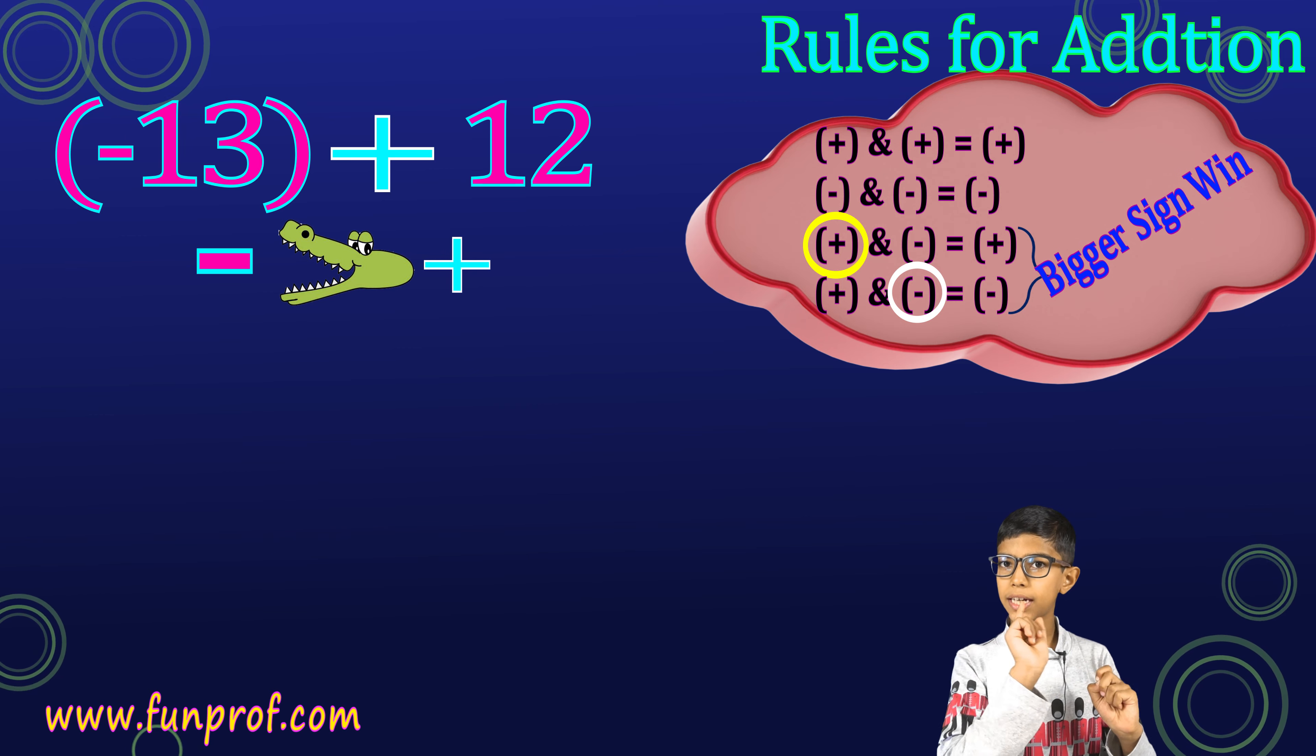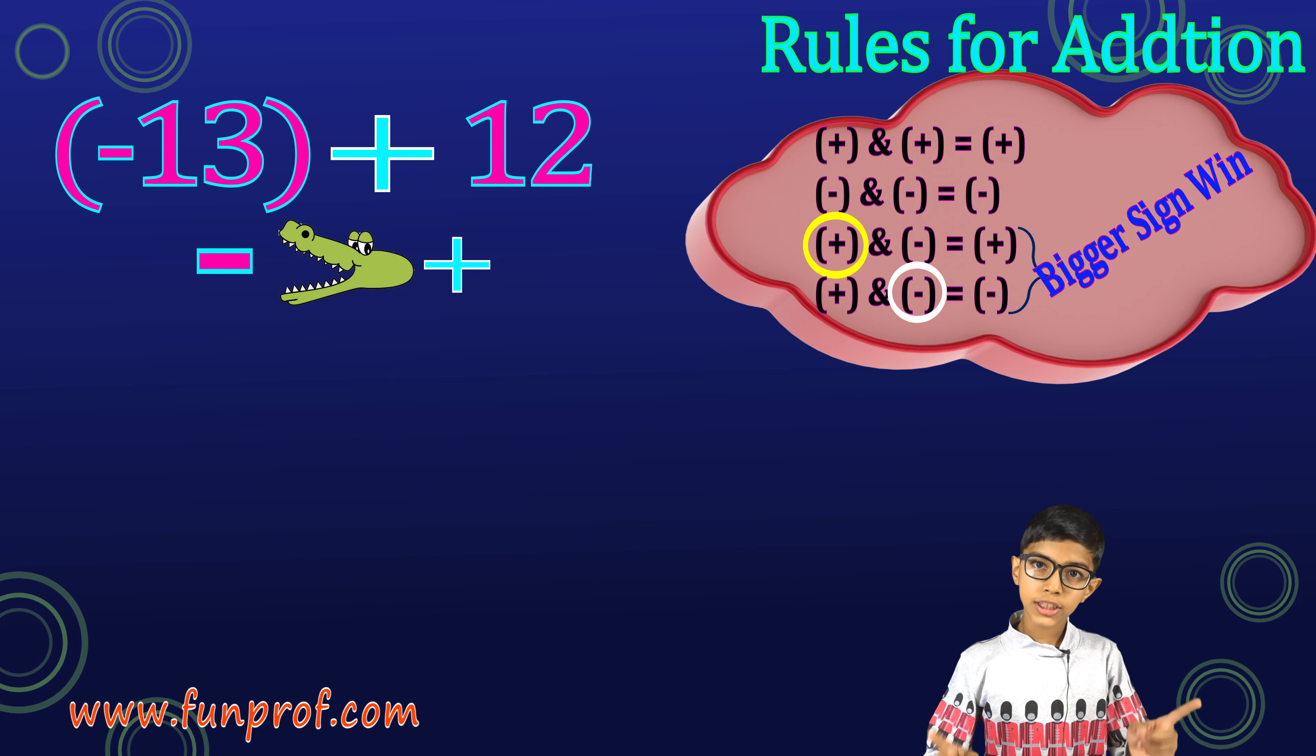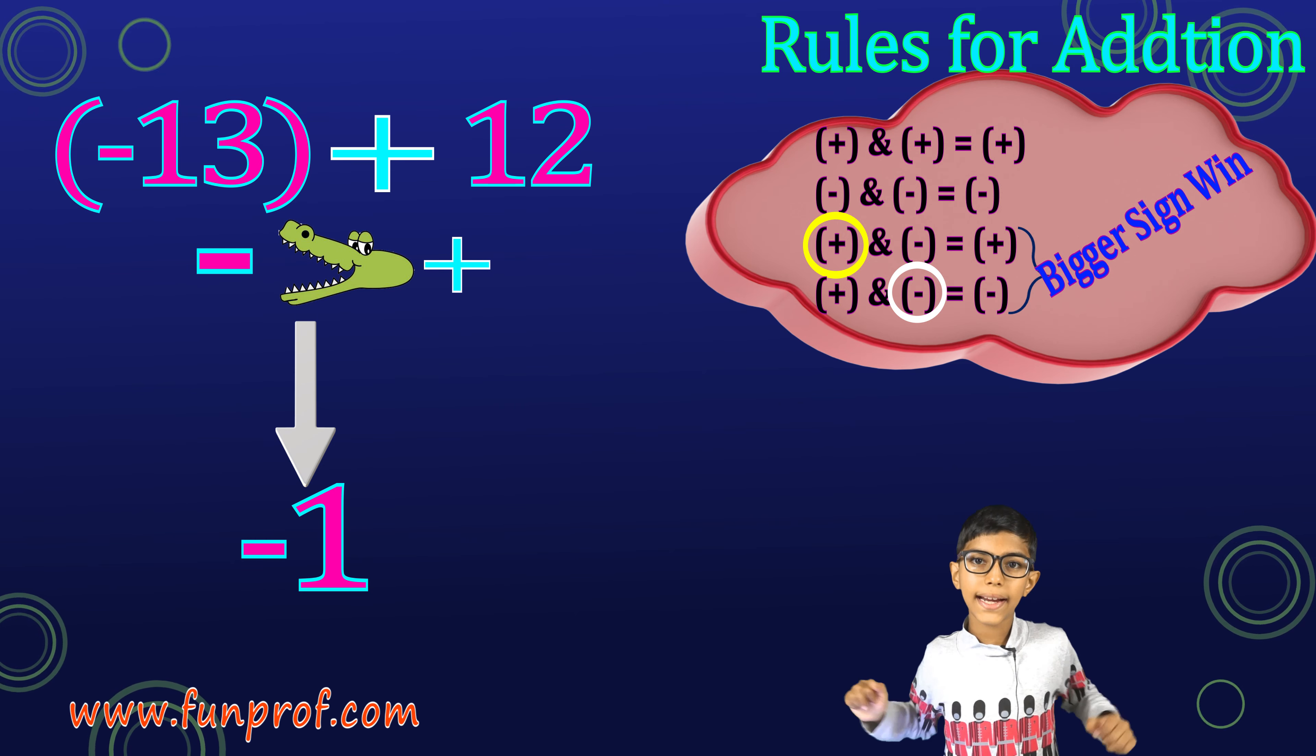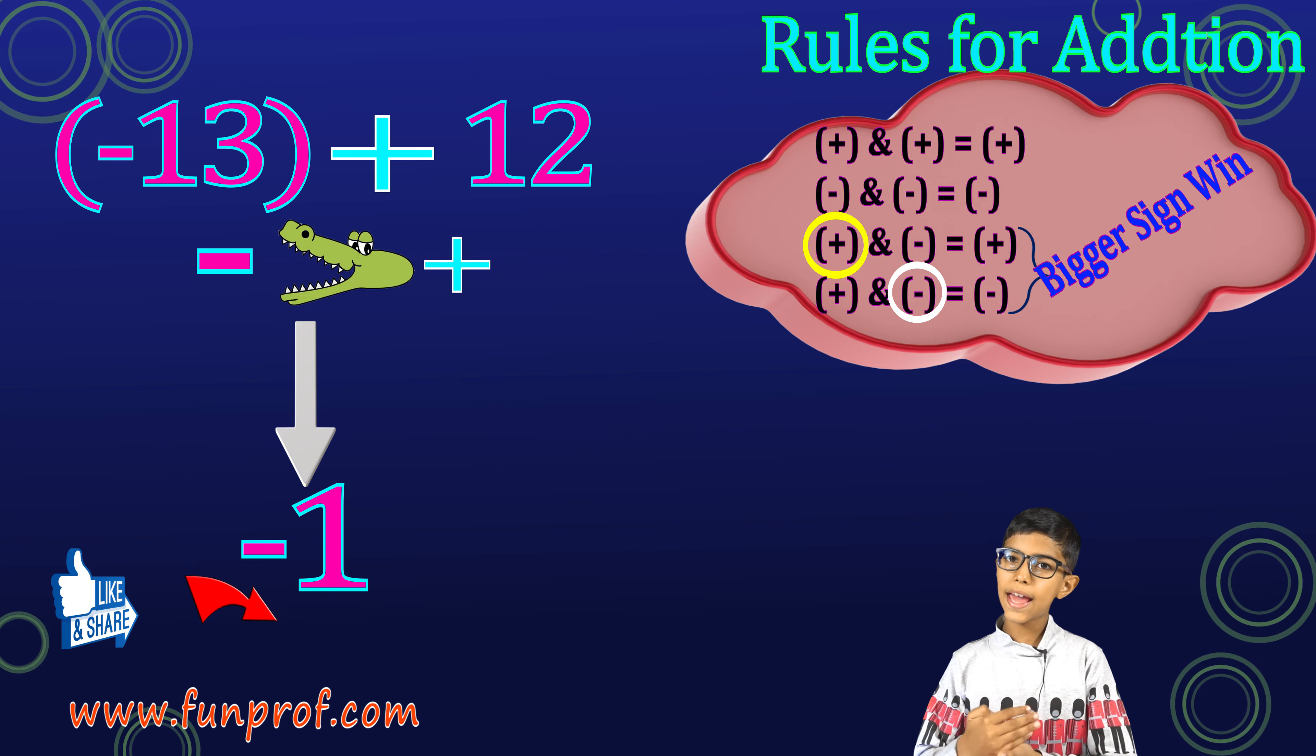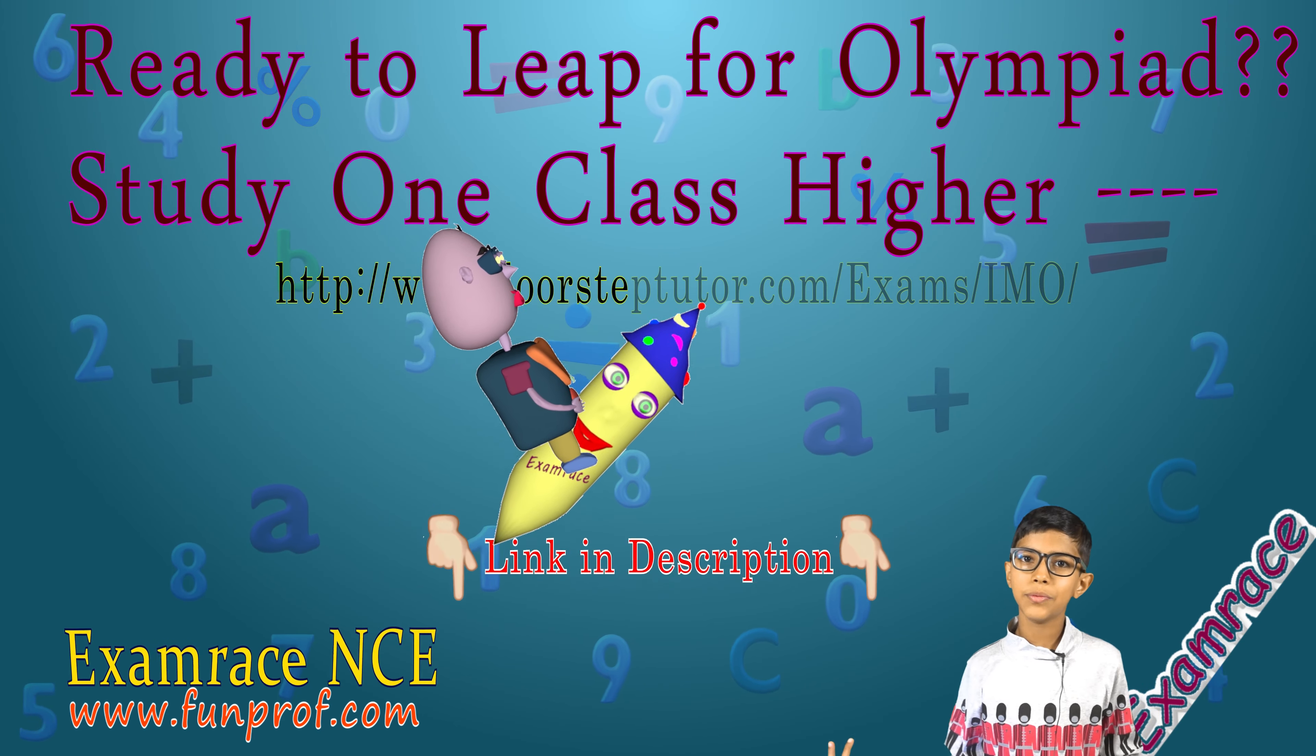So, if it's minus 13 plus 12, the bigger sign is minus because the bigger number is 13 and 13 is a minus sign. Now, so, of course, the answer will always be in minus. Because plus and minus, it's minus. And if it's vice versa, we do the same. These rules apply for subtraction too.